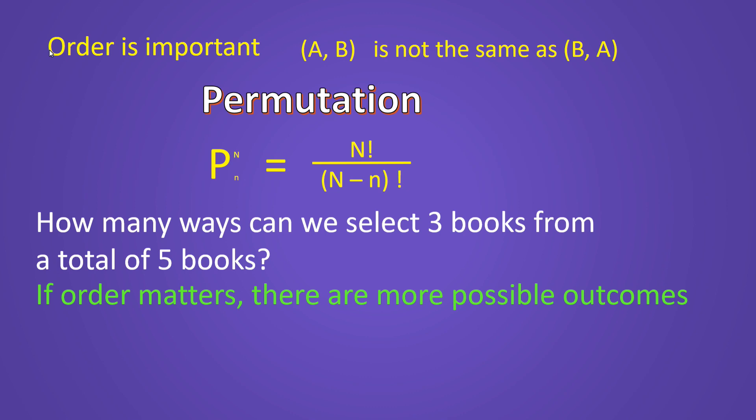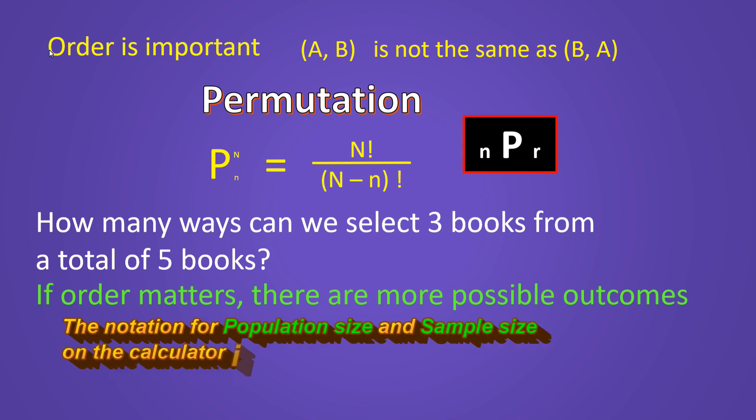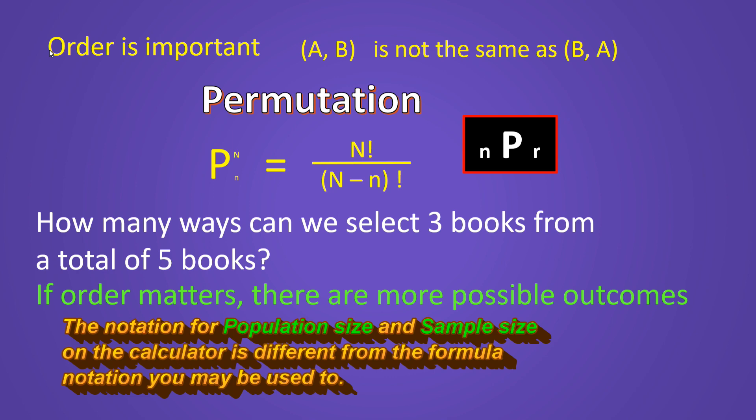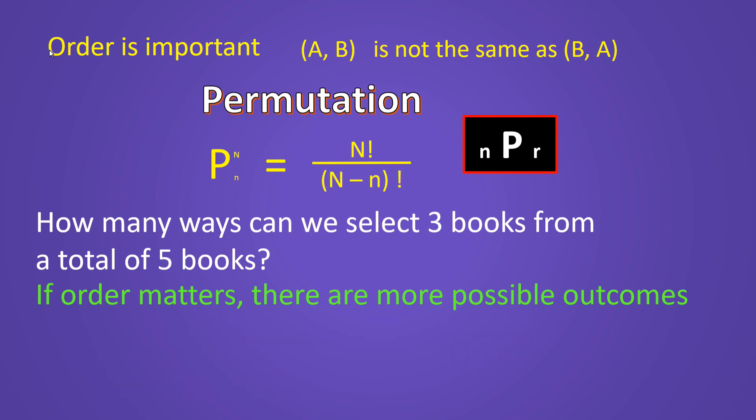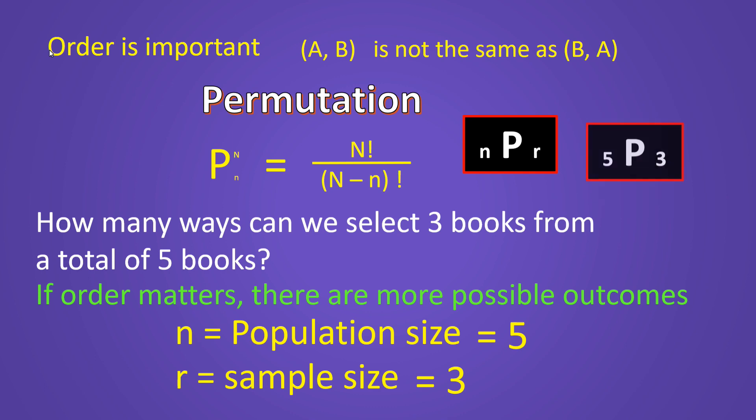The notation for permutation on your calculator looks like this. Little n, then a big P for permutation, and then little r. So it looks like the combination formula, but instead of a C for combination, we have a P for permutation. So little n is still the population size, and that is five. And then our sample size is little r, and that is still three. So the notation on the calculator would look like this: five, then a P, and then a three.